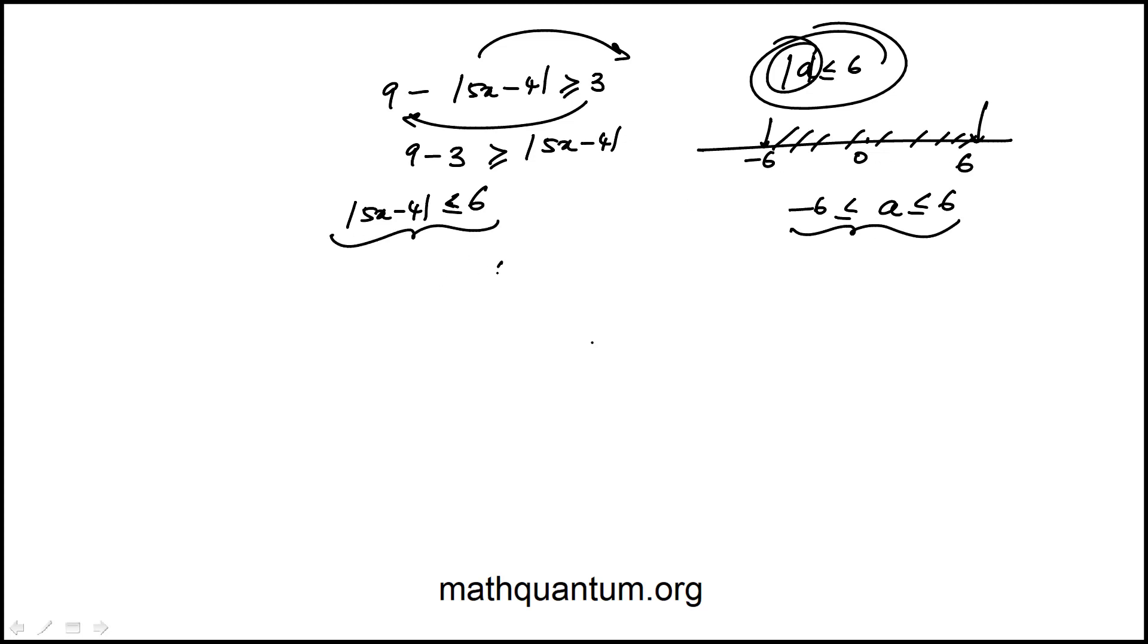We can rewrite this as 5x minus 4 less than or equal to 6 greater than minus 6. Then I'll add 4 to each one of these terms. You can do that in this form as well. So then it becomes 5x is less than or equal to 10 and greater than minus 2.